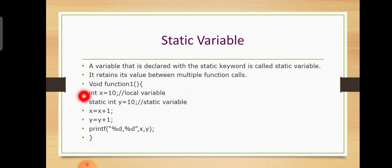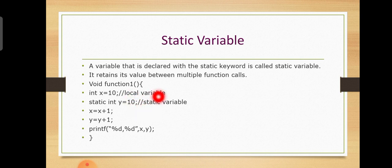When we do x equals x plus 1, it becomes 11. Similarly, y equals y plus 1 equals 11. So x is 11 and y is 11 after the first call. Next time this function will be called, what is the difference?